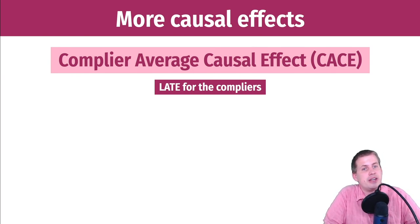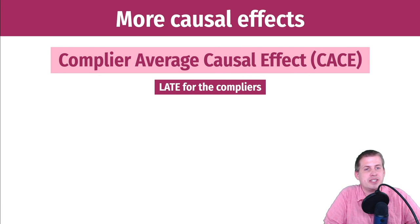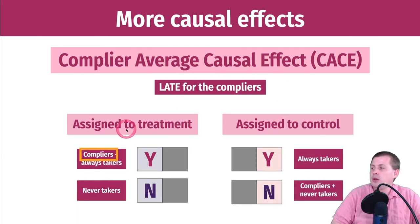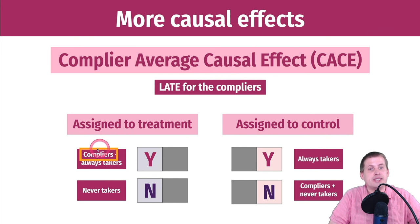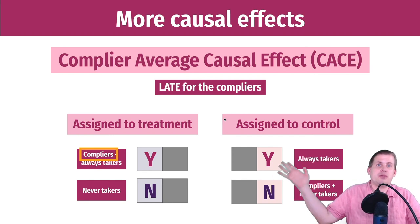What we ultimately want when there are compliance issues is the complier average causal effect, or CACE. This is a conditional average treatment effect. We call it CACE instead of CATE because the CATE acronym is already taken by conditional average treatment effect. CACE is the effect of actually using the program for compliers only — not always takers, not never takers. It's the local average treatment effect for just the compliers.